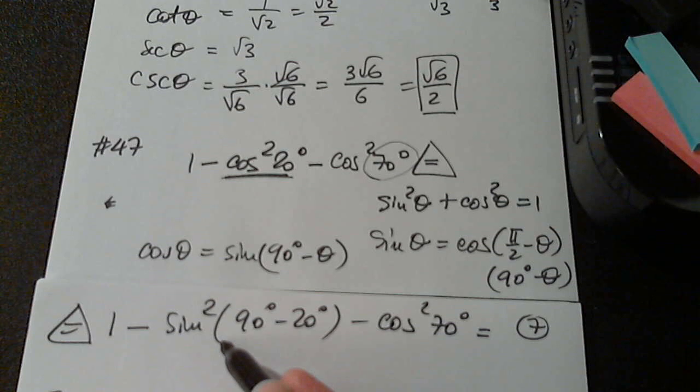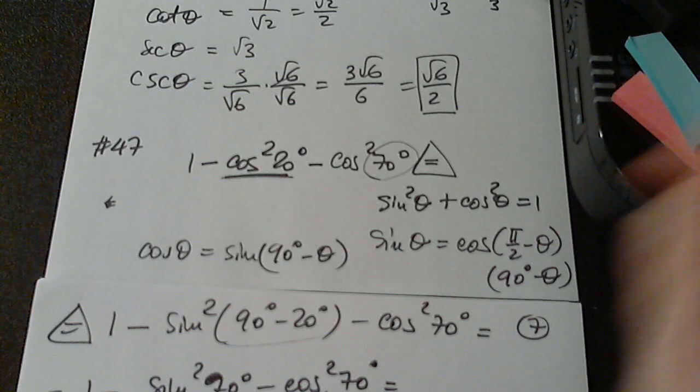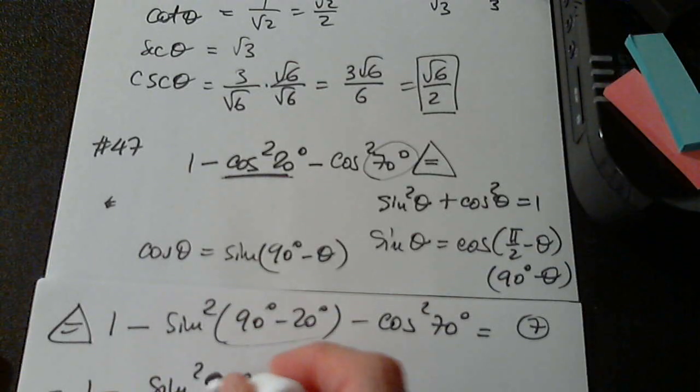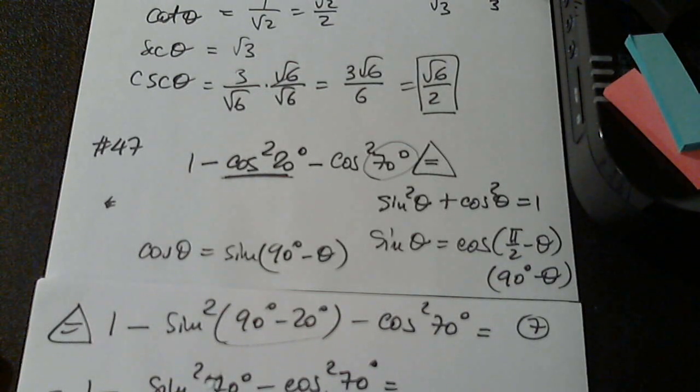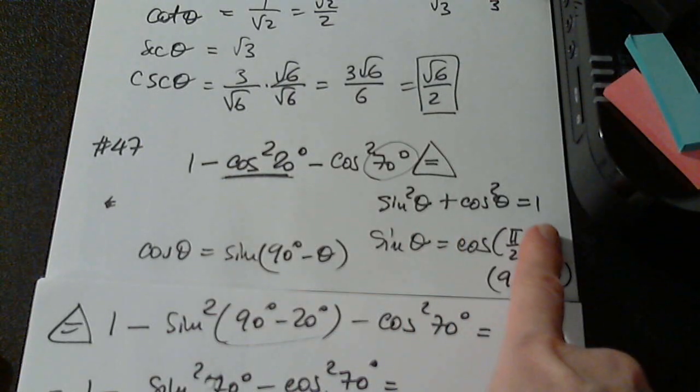When I perform the calculations, I get 1 minus sine squared 70 degrees minus cosine squared 70 degrees. And I like that. Why do I like it? Because I see sine squared plus cosine squared equals 1.